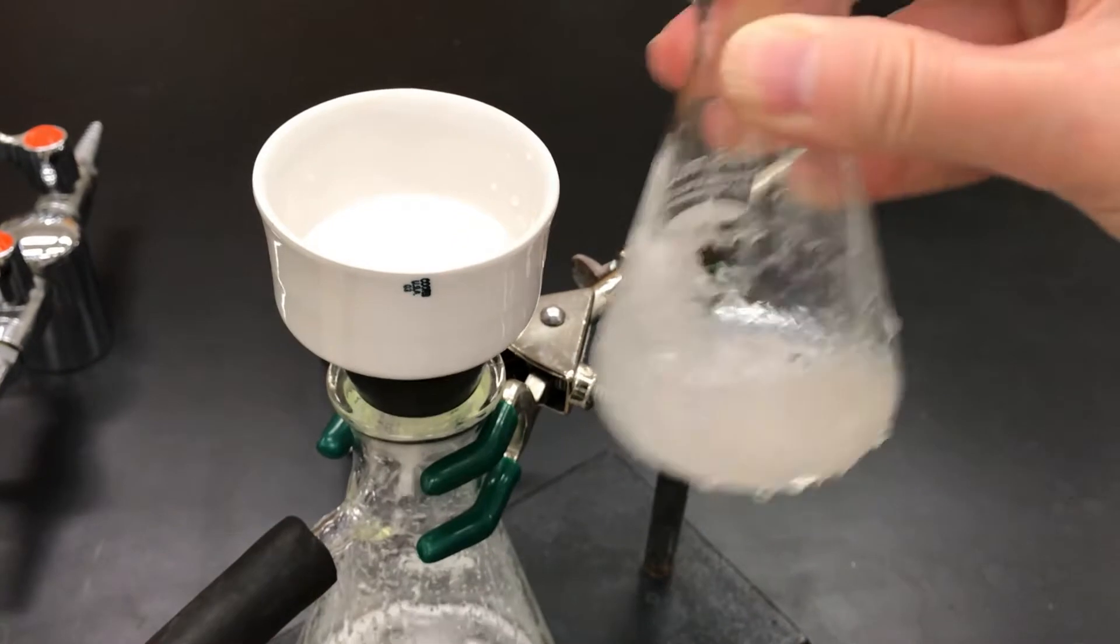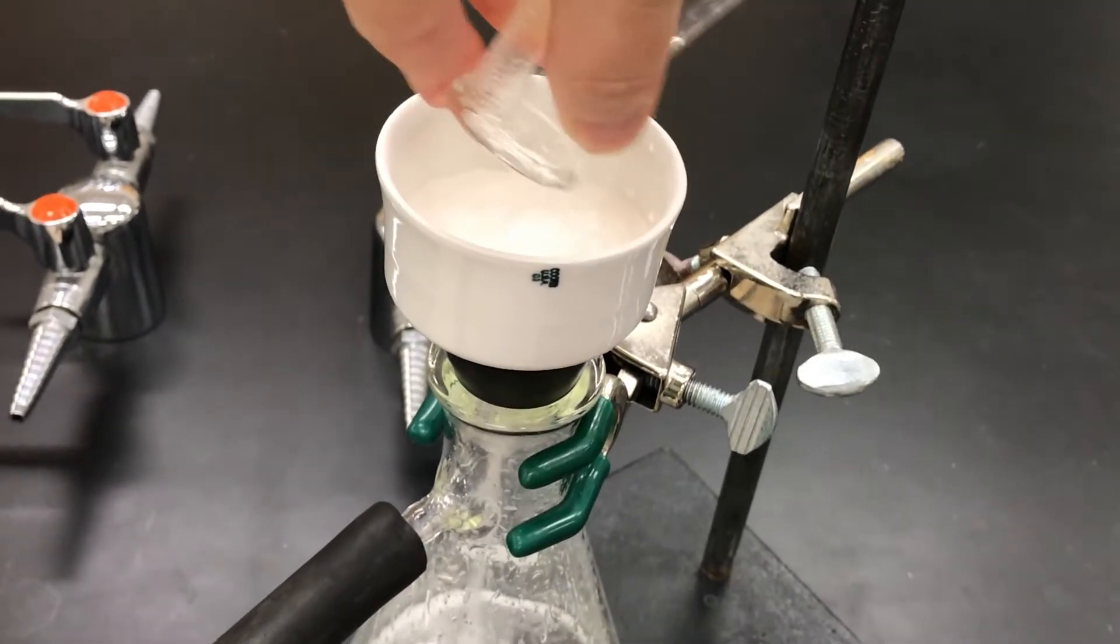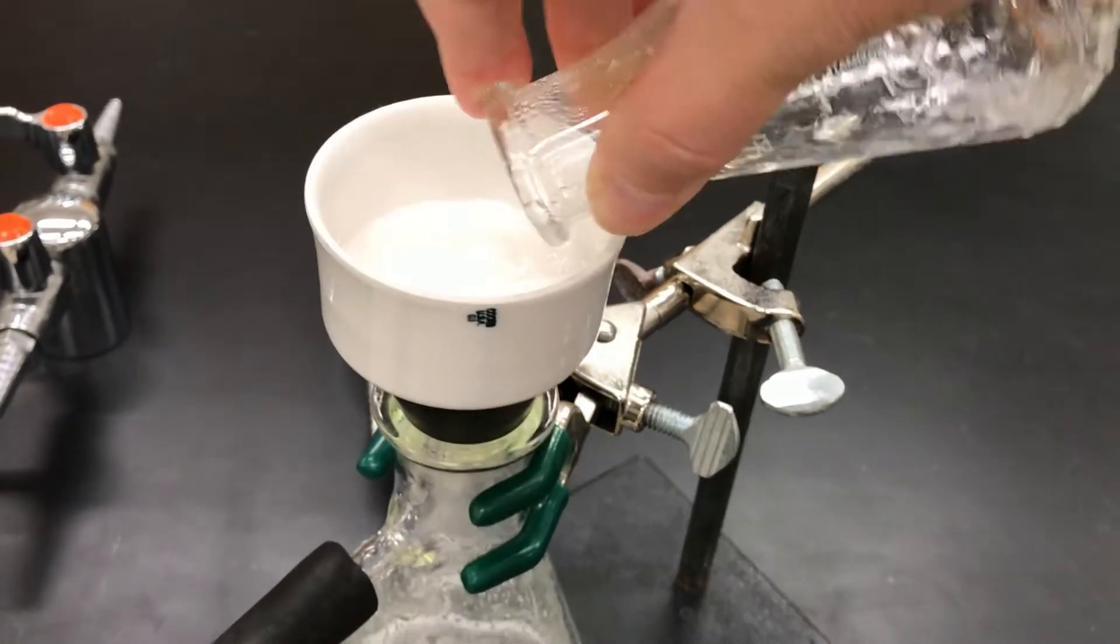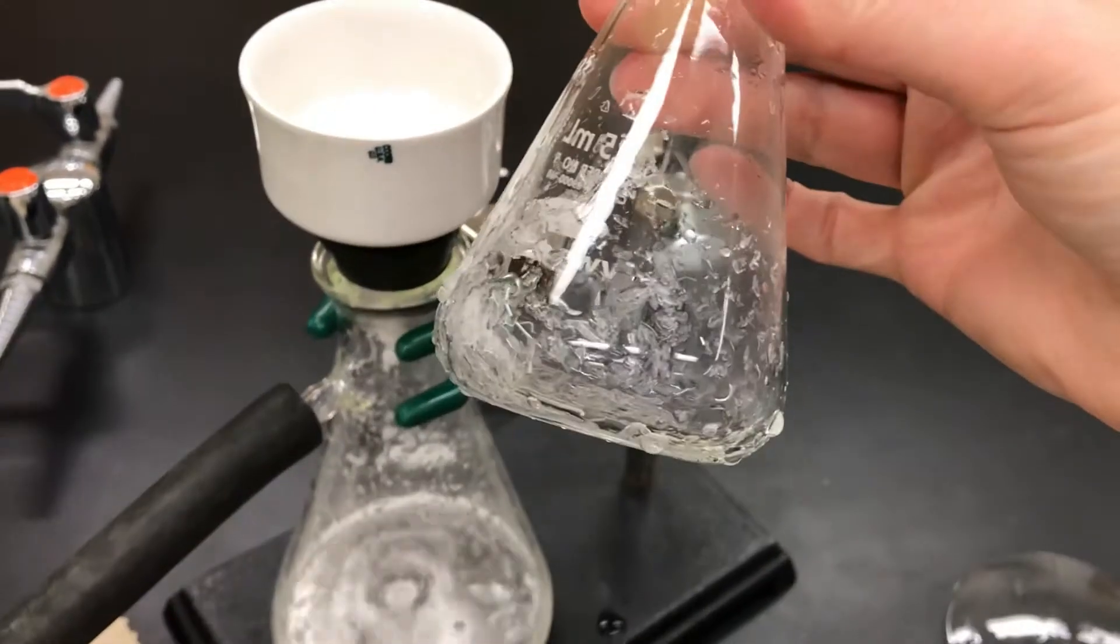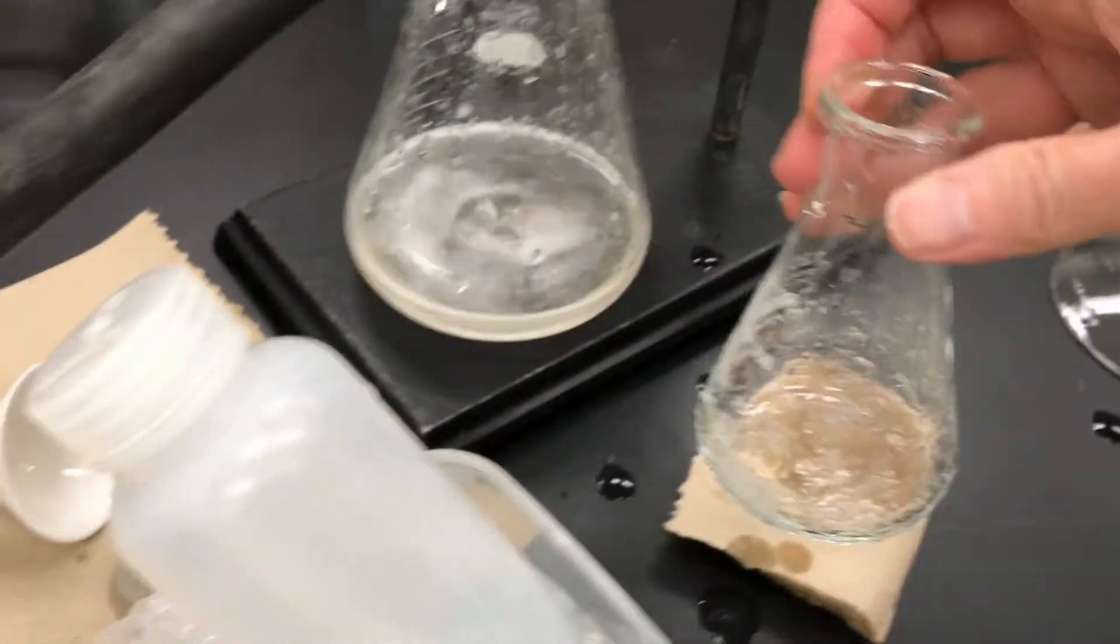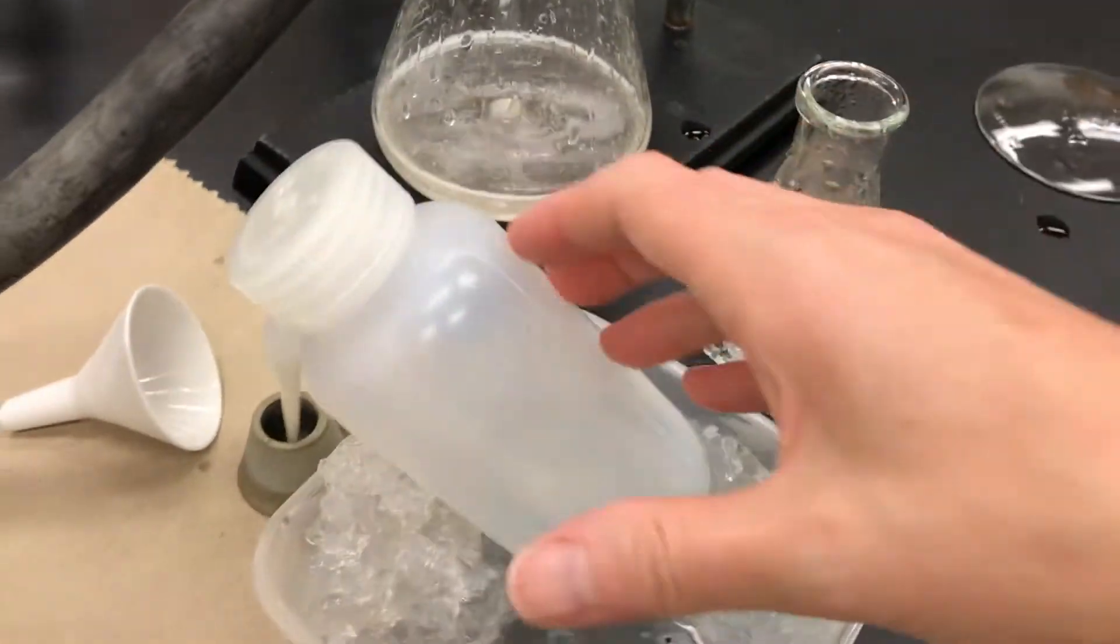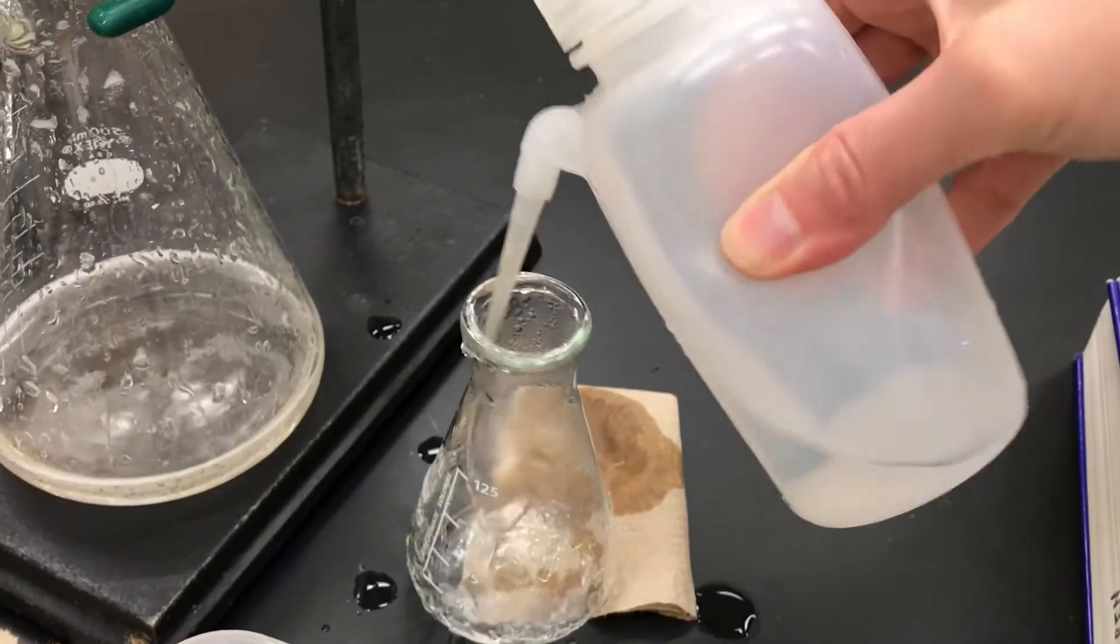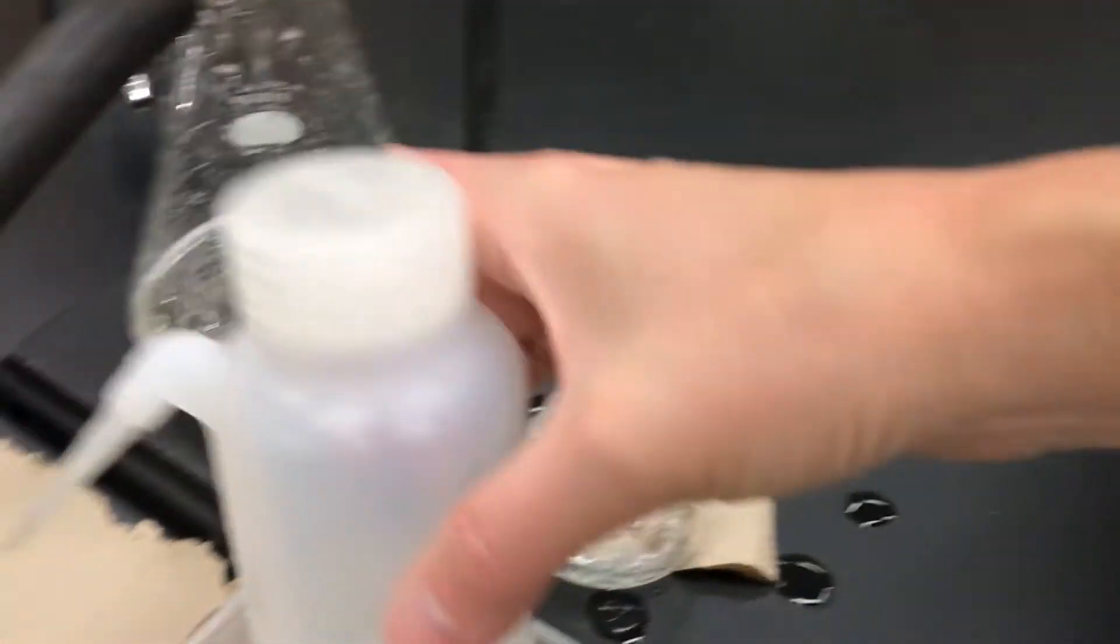And we do want that solid out of the flask. So swirl it and dump it to get it out. There's going to be some solid residue that's probably left and I would give it at least one rinse because I do want to get as high yield as possible.